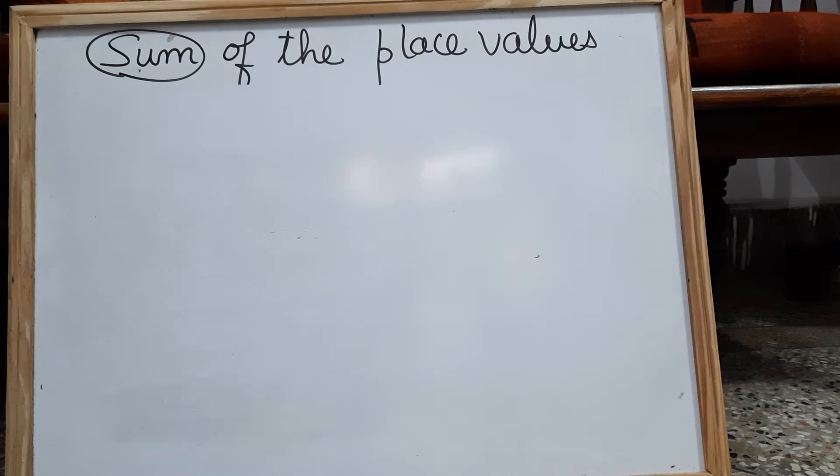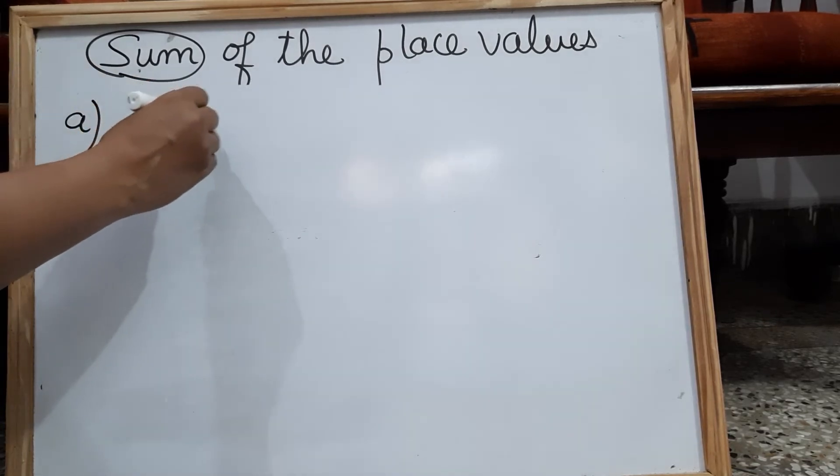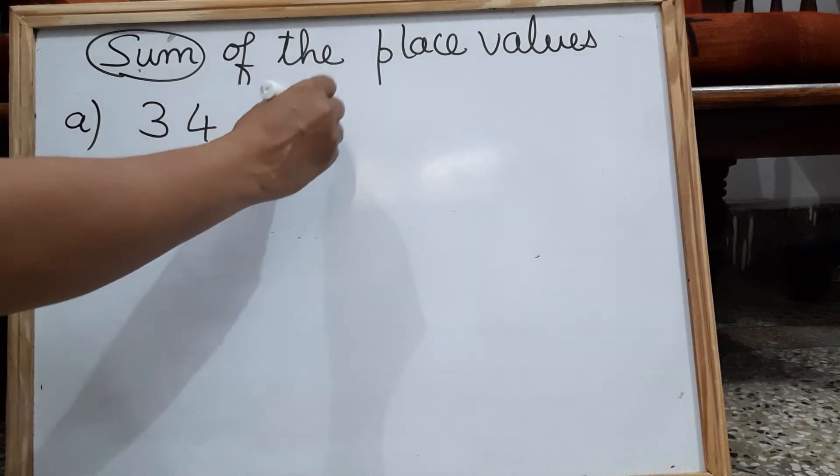So once you know how to find the place values, very easily you can find the sum of the place values of the given digits. So one question I am taking: 34,424.